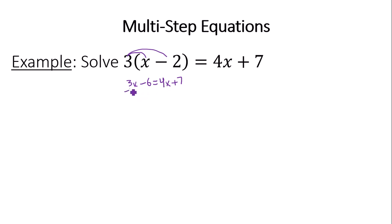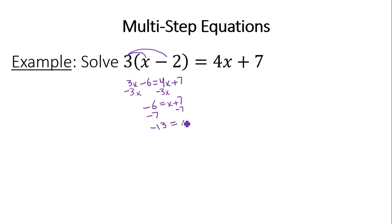I'm going to subtract 3x from both sides, giving negative 6 equals x plus 7. To get x by itself, subtract 7 from both sides, giving negative 13 equals x — which is the same as x equals negative 13, because of the symmetric property of equality.